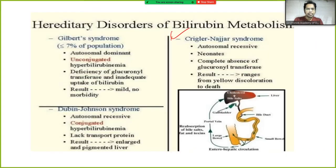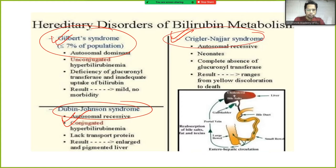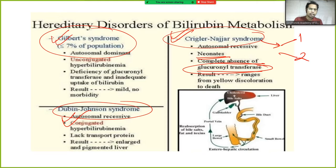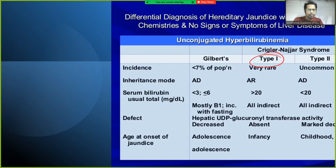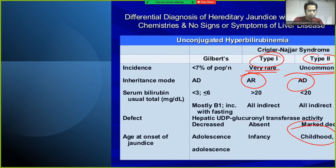Crigler-Najjar syndrome involves Gilbert syndrome type 1 and Dubin-Johnson syndrome. Crigler-Najjar type 1 is autosomal recessive and type 2 is autosomal dominant. It involves complete absence of the enzyme glucuronyl transferase, resulting in jaundice ranging from yellow discoloration to death. Type 1 presents in infancy and is very rare; type 2 presents in childhood and is uncommon.